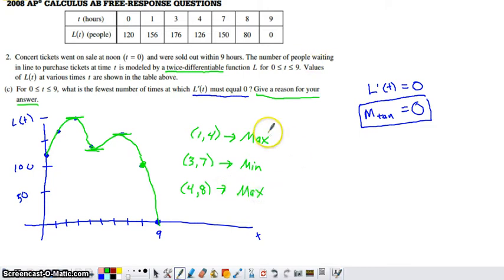Now, candidates for local maxes and local mins are two things: stationary points, which are places where the slope of the tangent line equals 0, and singular points, which are places where the derivative is undefined. Since our function is twice differentiable, we know there aren't any places where our function is undefined. So to have the two local maxes that our graph would need, as well as the one local min that our graph has to take on, we have to have at least three points where L'(t) equals 0.